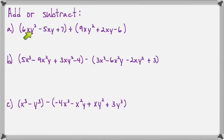Here I have 6xy² and 9xy², so together that makes 15xy². Now I have -5xy and +2xy, together they make -3xy. Then I have 7 and -6, together they make positive 1.